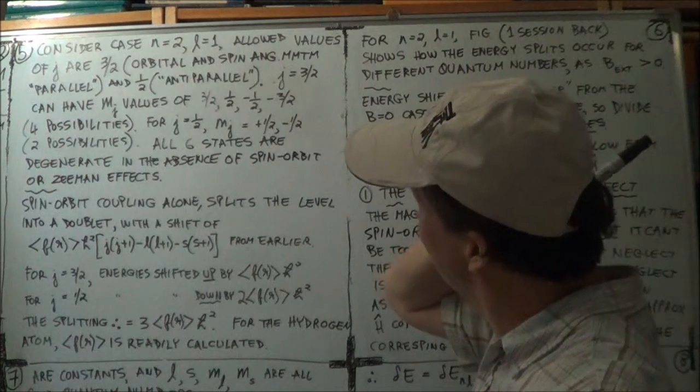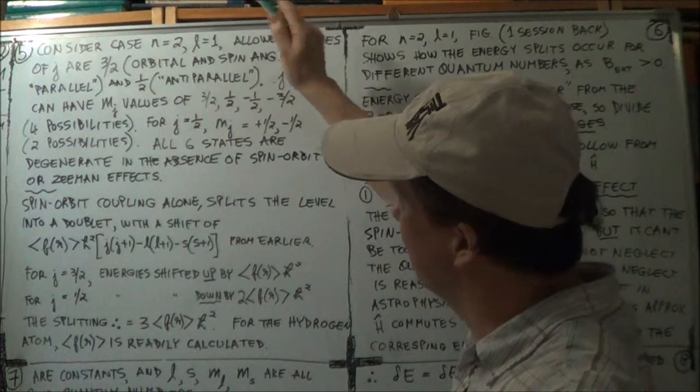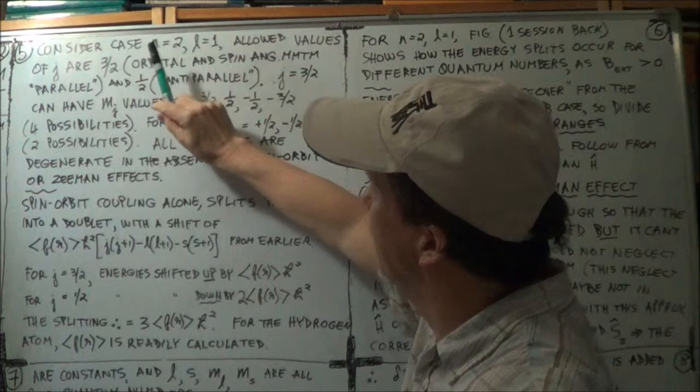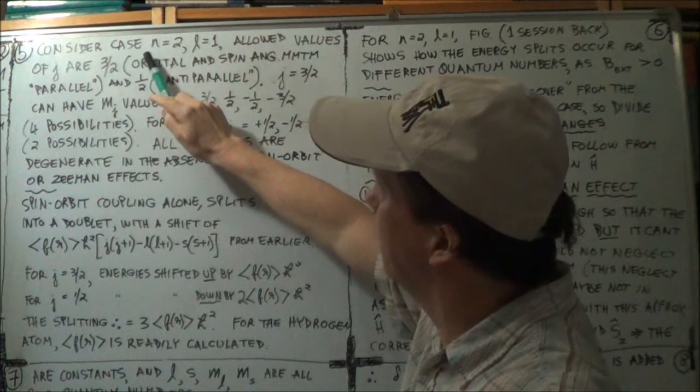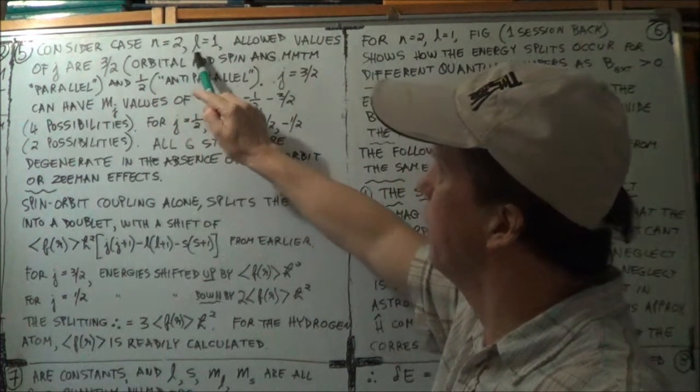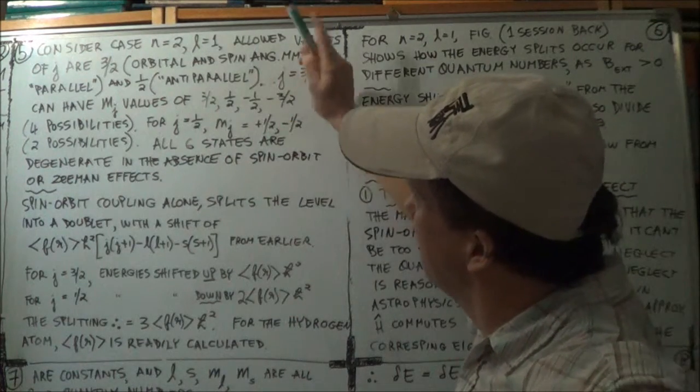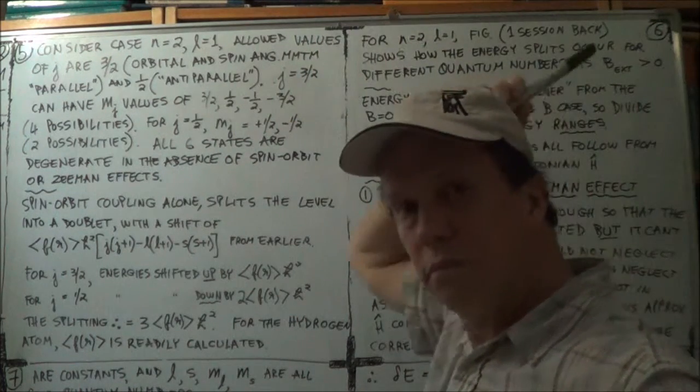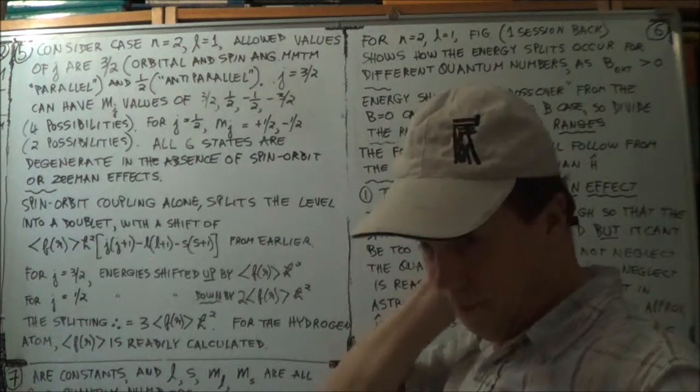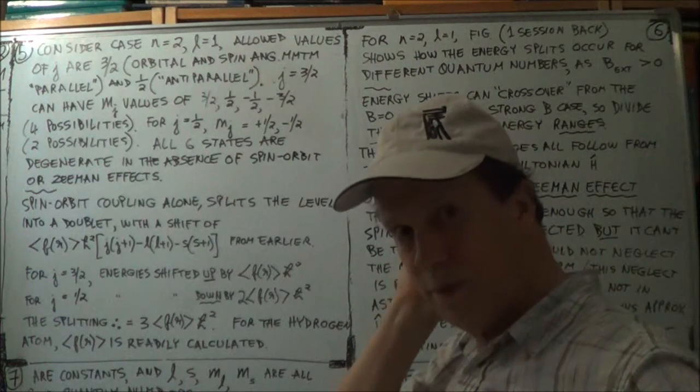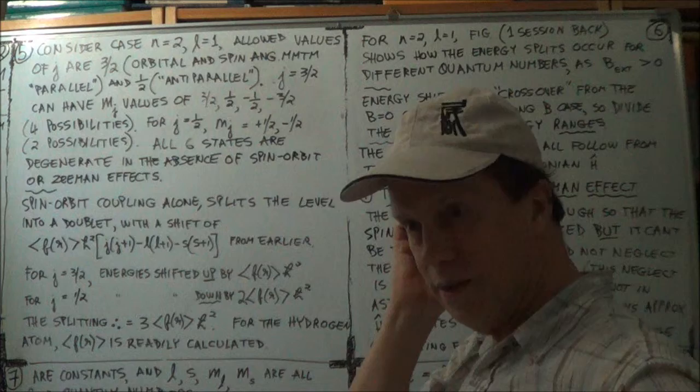So let's take the case then for the Zeeman effect, where N is 2, the quantum number N is 2 and L is 1. And we're talking spin coupling. So we have spin. So a value of S as a half.